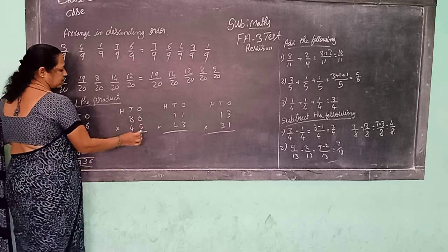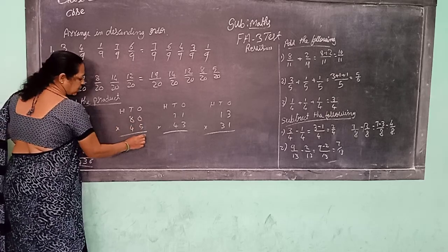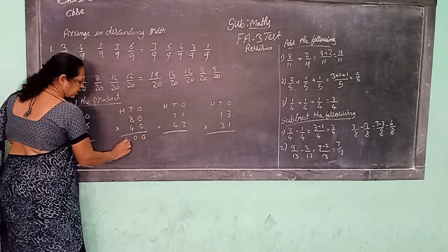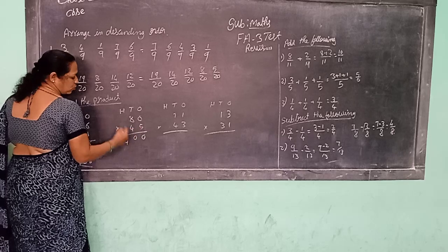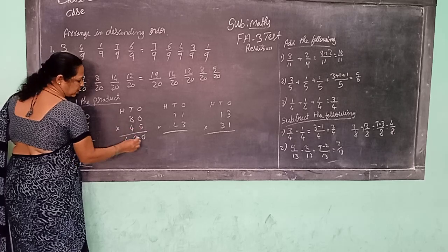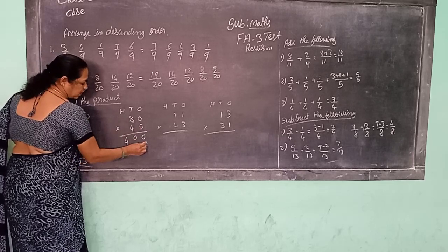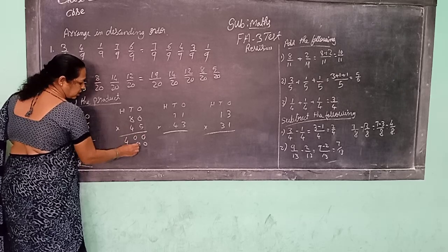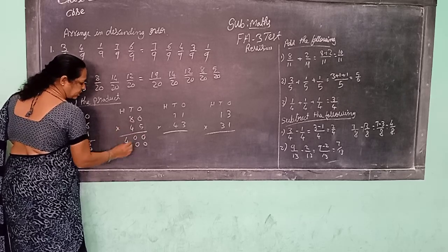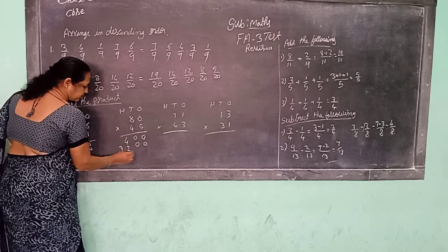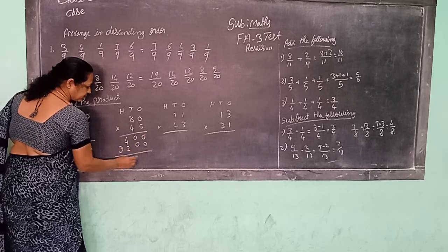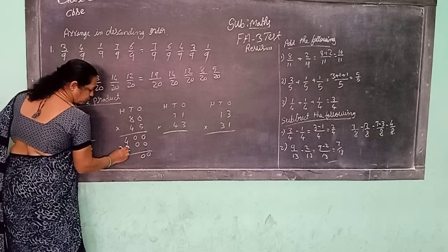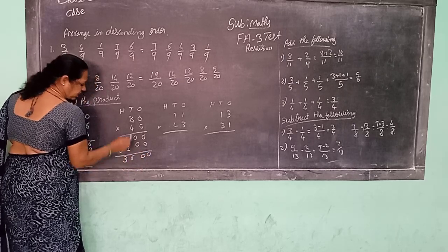Next: 5, 0's are 0. 5, 8's are 40. The ones place is over, so now we start with the tens place. Put 0 in the ones place. Now 4, 0's are 0. 4, 8's are 32. Right 0, 0. 4 plus 2 is 6, carry 3.